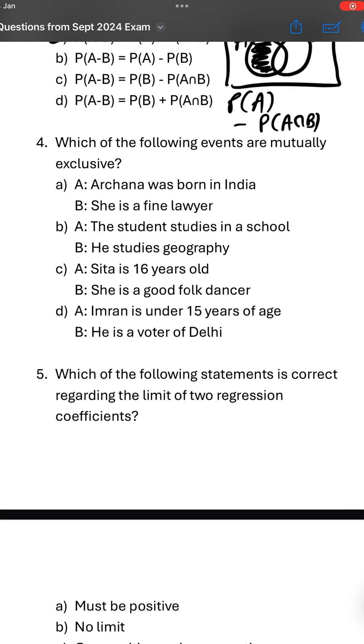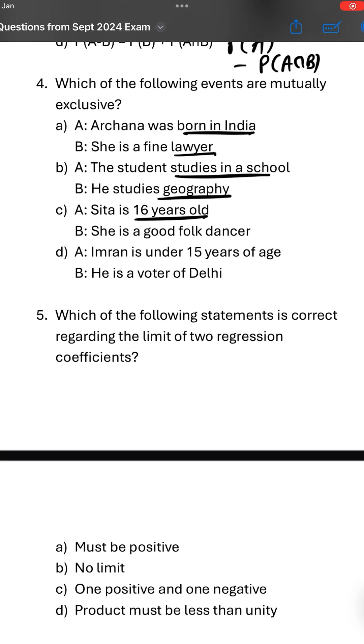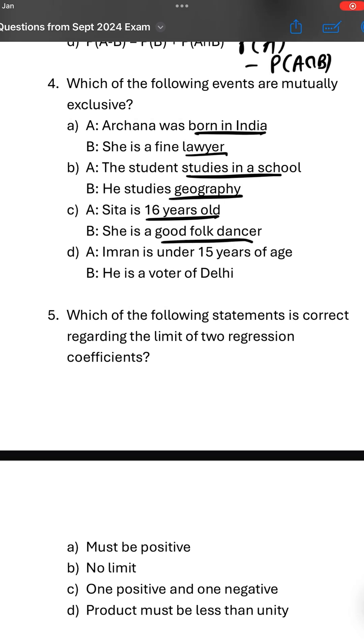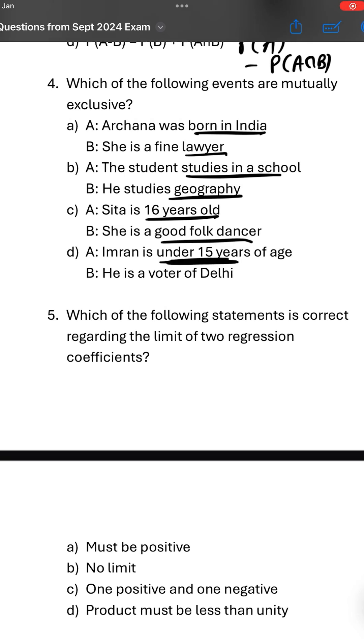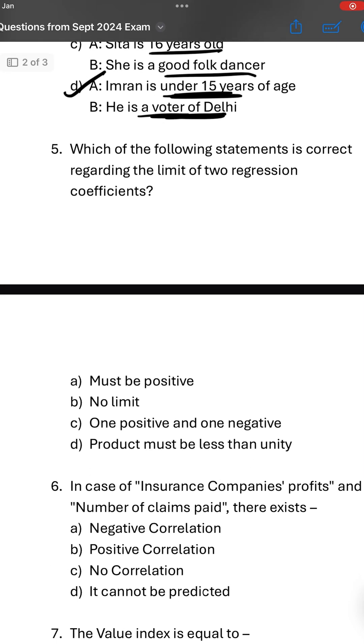Which of the following events are mutually exclusive, that means cannot happen together? Archana was born in India, she is a fine lawyer - can happen. Studies in school, studies geography - can happen. 16 years old and good folk dancer - possible. But under 15 years of age and voter of Delhi - not possible, because you have to be 18 plus.